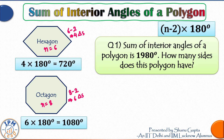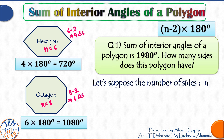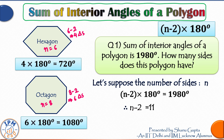Let's try a reverse question: the sum of interior angles of a polygon is 1980 degrees — how many sides does this polygon have? We assume the number of sides is n. So (n − 2) × 180 = 1980. Since 180 × 11 = 1980, this angle sum corresponds to 11 triangles, so n − 2 = 11 and therefore n = 13.